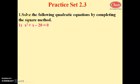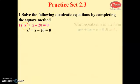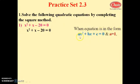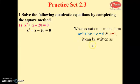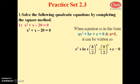To compare this method with the factorization method, consider the quadratic equation: x² + x - 20 = 0. When the equation is in the form ax² + bx + c = 0 and a = 1, we see that x² + bx + c = 0 with a = 1. So it can be written as: x² + bx + (b/2)² - (b/2)².